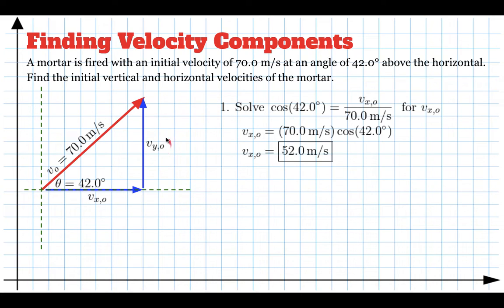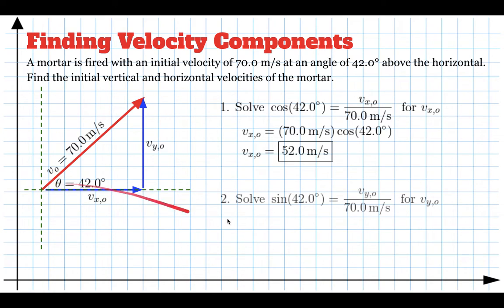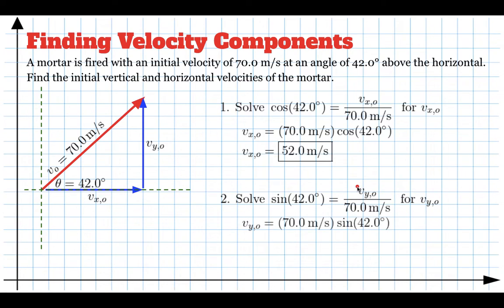The mortar is also moving upwards. To find how fast it's moving up, we need the side of the triangle opposite the angle, and for that we use sine. The sine of 42 degrees equals the opposite side divided by the hypotenuse. We're solving for the velocity in the y direction initial, so multiply both sides by 70: vy_initial = 70 × sin(42°). Plugging that into a calculator gives 46.8 meters per second.